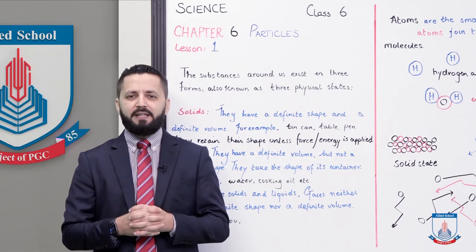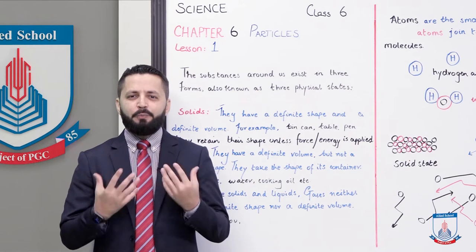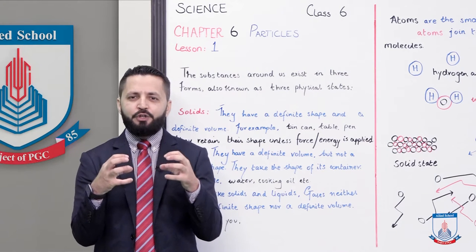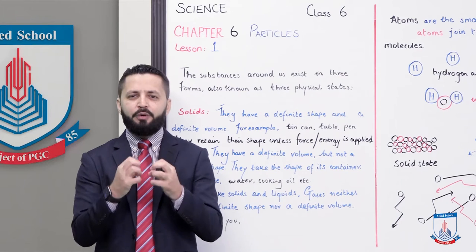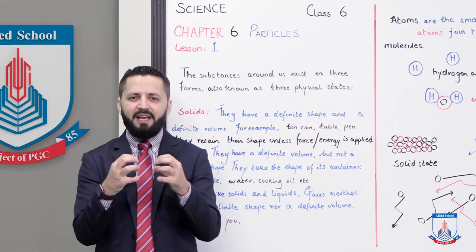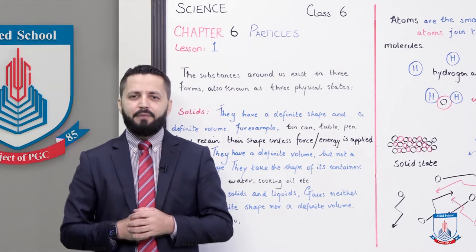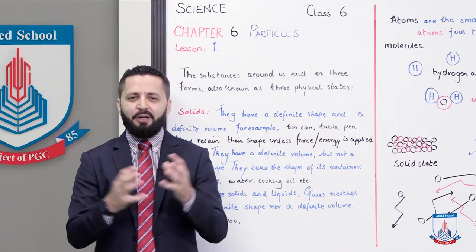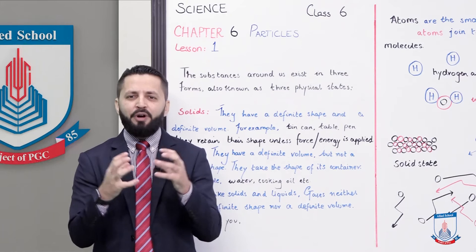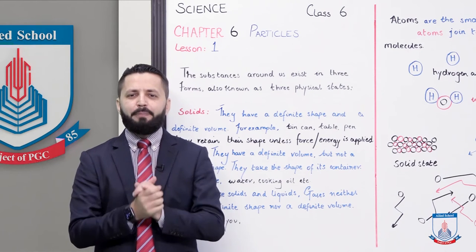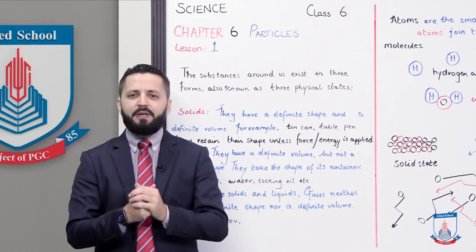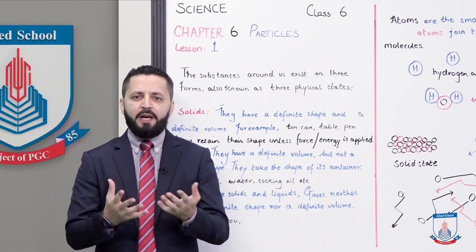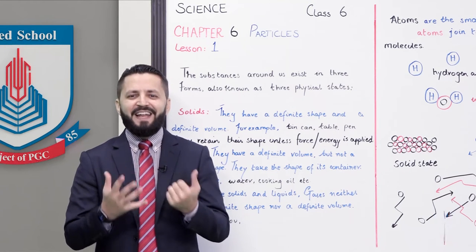When solids were studied and researched, it was noted that these are compact particles joined together, very closely joined, and they have only a slight motion in place. Because of their compact structure, they have a definite shape and definite volume. They retain their shape unless a force or some form of energy is applied to them — that is the only case where solids cannot retain their shape.